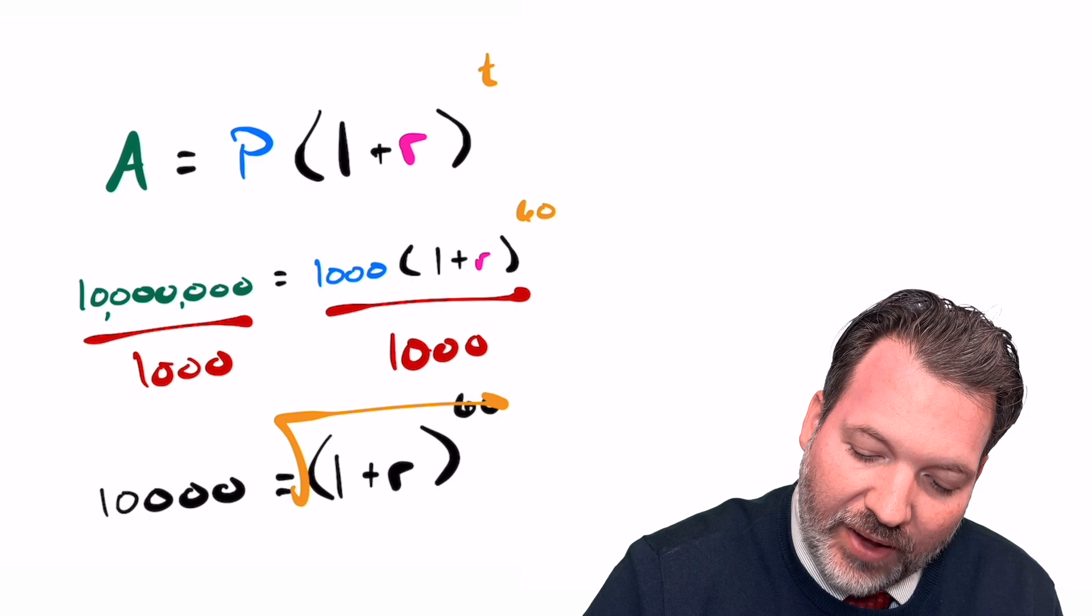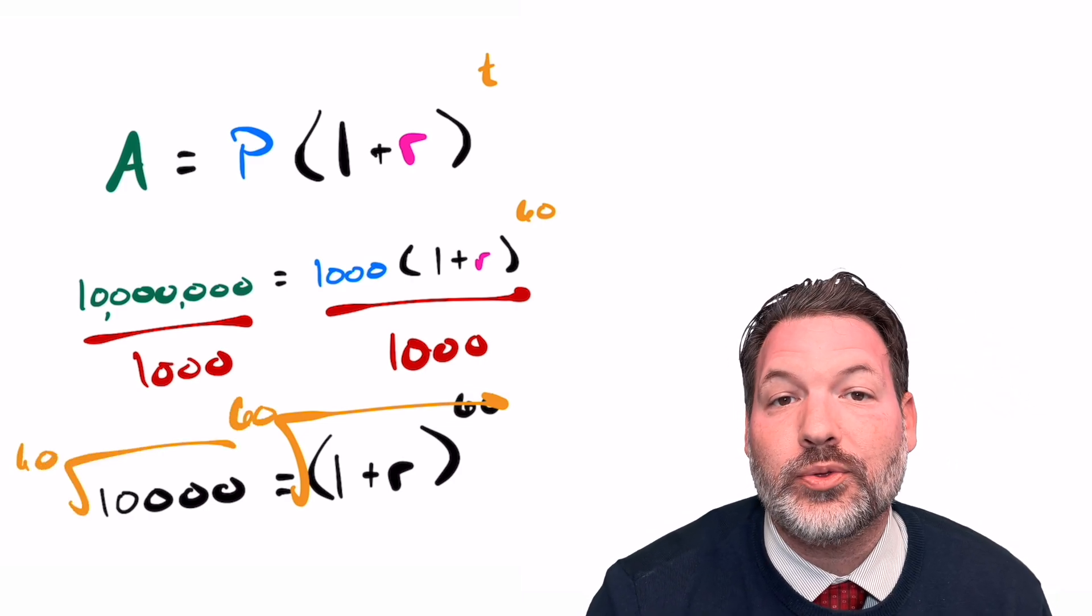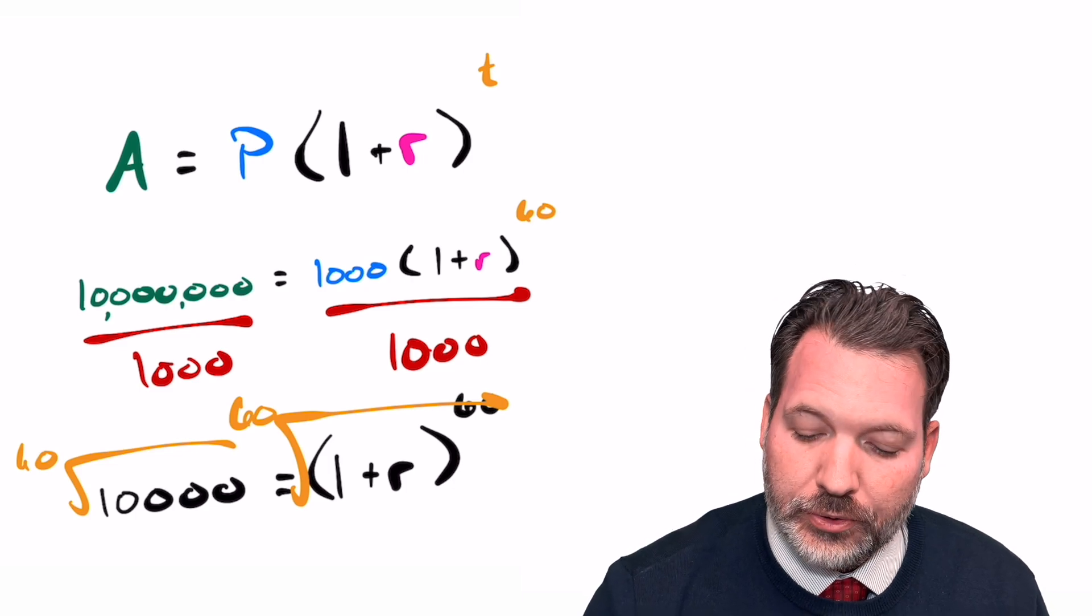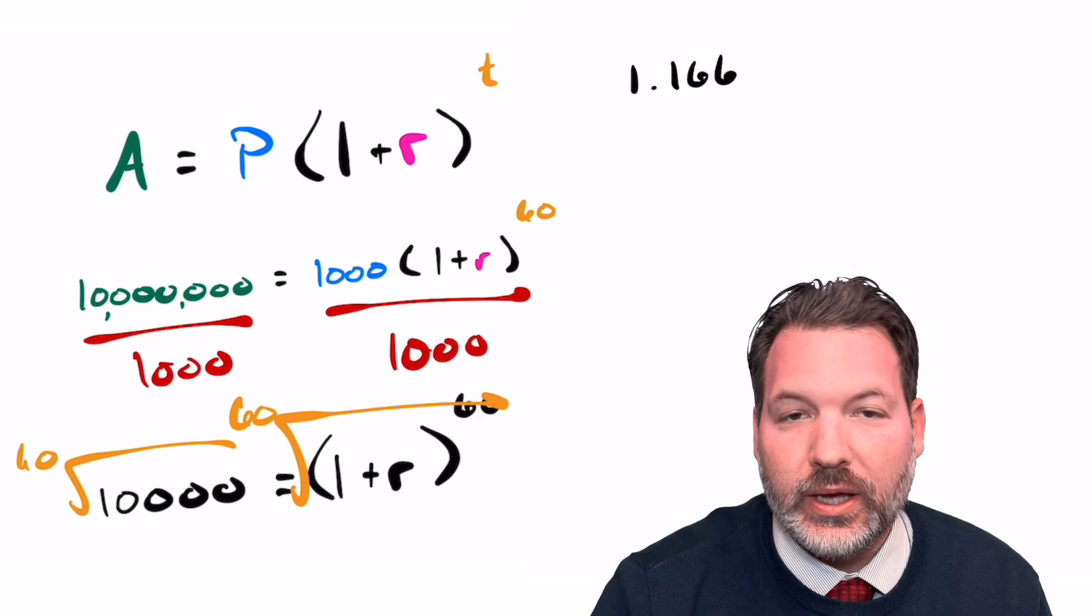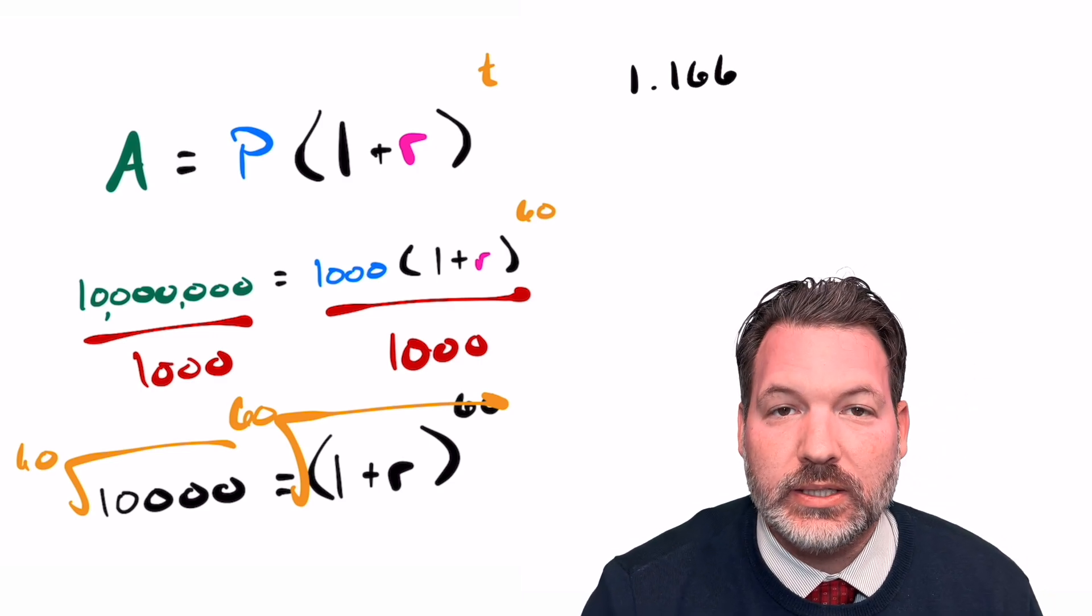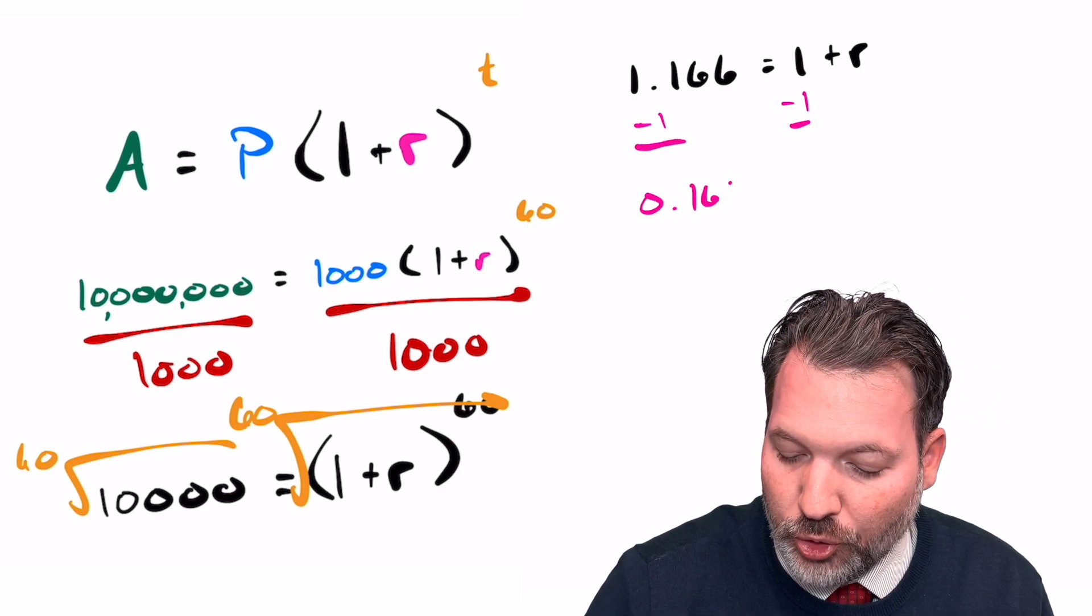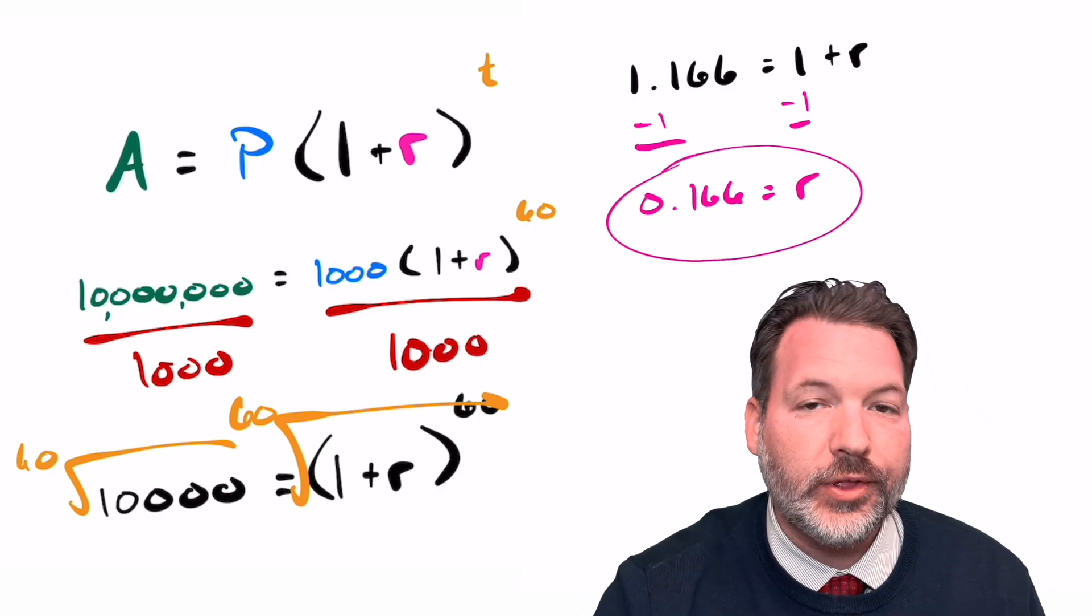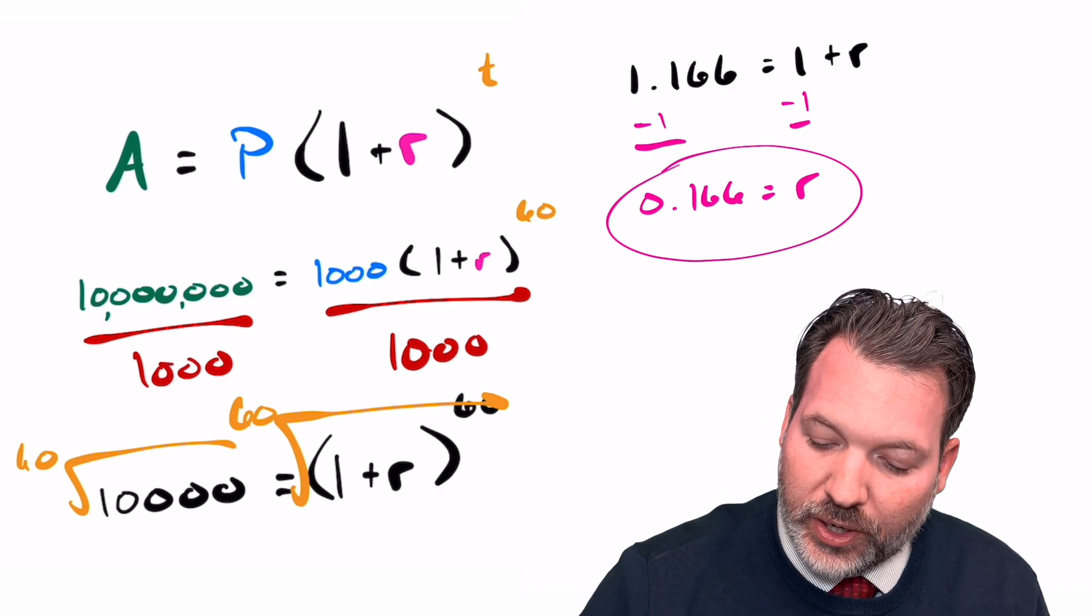To do this part, we have to undo a power of 60, meaning we're going to take the 60th root of 10,000. Now, for sure, I cannot do that in my head, but typing that into a calculator, we come up with roughly 1.166. Since this is going to be equal to the 1 plus R, that must mean the rate of growth itself over those 60 years is 0.166.